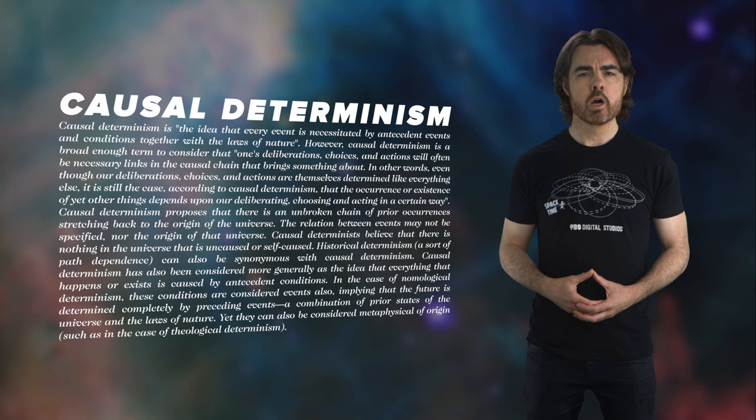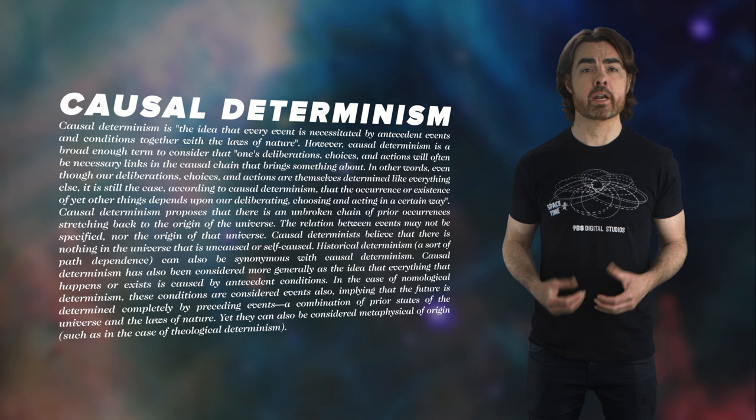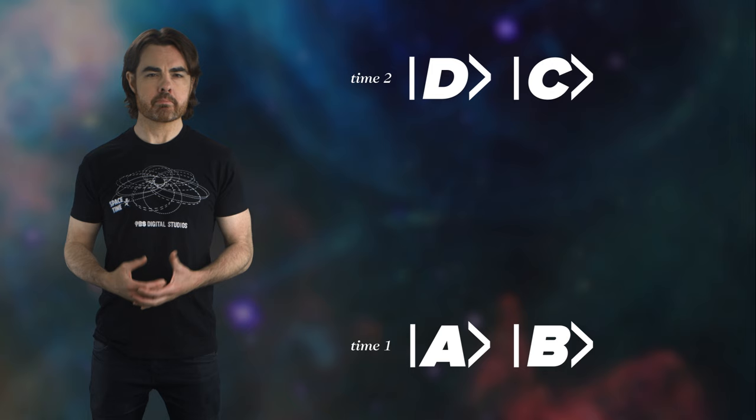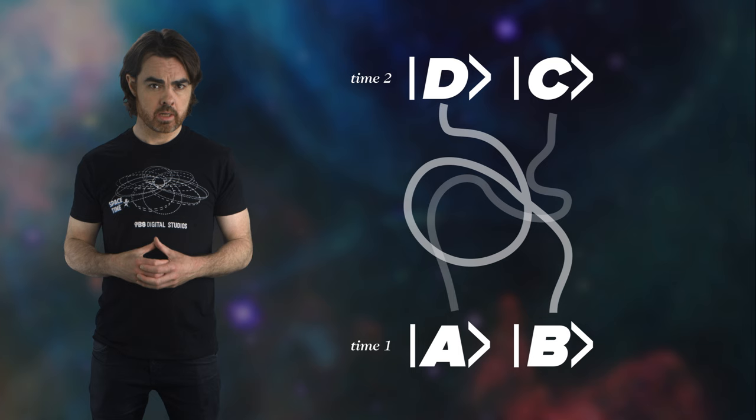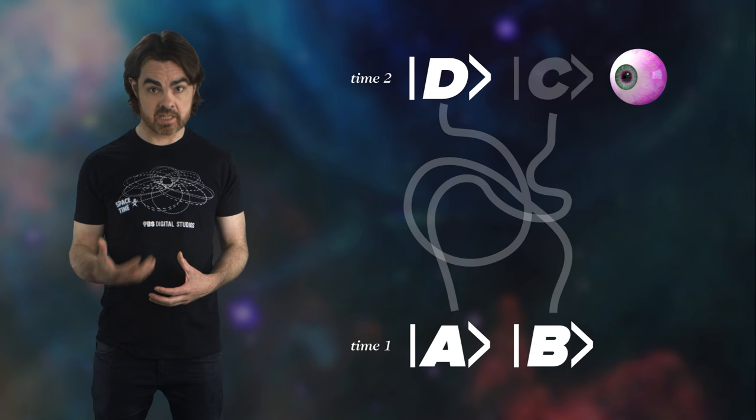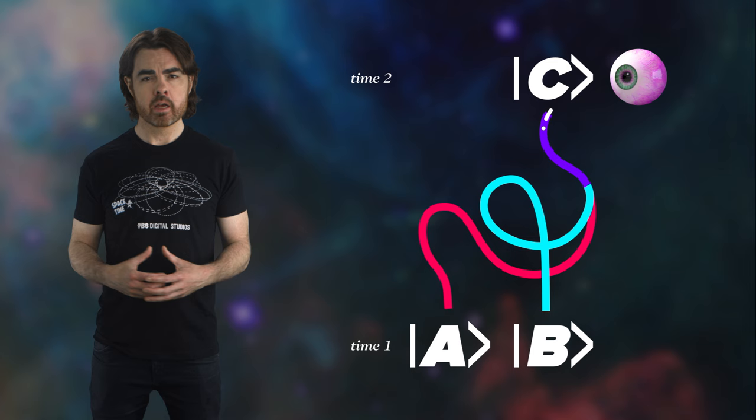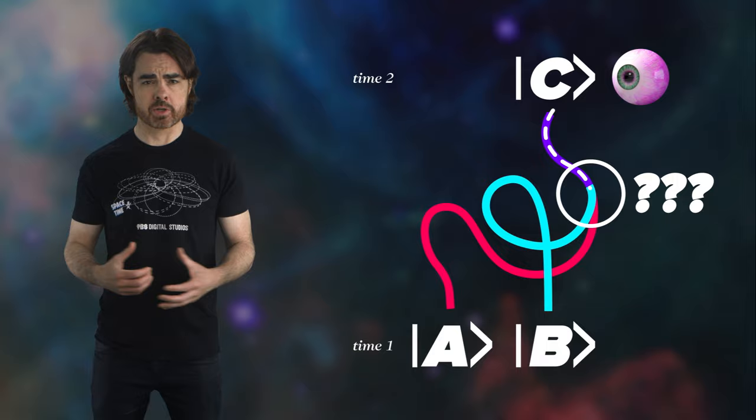For example, what if many different configurations of particles in the present could converge on a single configuration of particles in the future? If a multitude of states can all evolve into the same state, then knowing the latter state isn't enough for us to figure out what past states led to it. For example, imagine you have two states, A and B, and the laws of motion say that A becomes C and B becomes D. If we look at the later state and see state C, we know A came first, but if we see state D, we know B came first. But what if both A and B lead to state C? That future direction is deterministic, but now if we look at the final state, we see state C, but we don't know which of A or B led to it. The information about those past states would be lost.